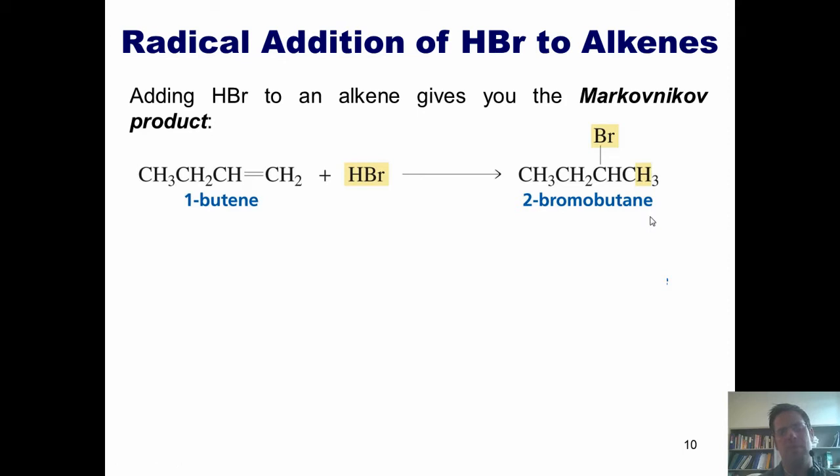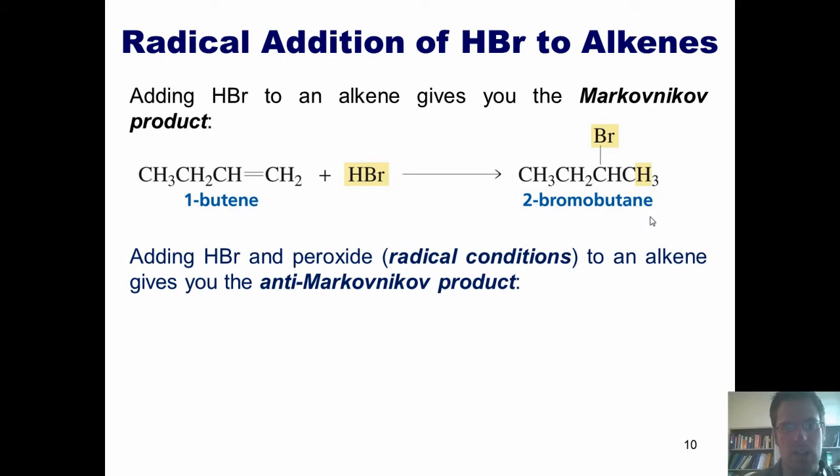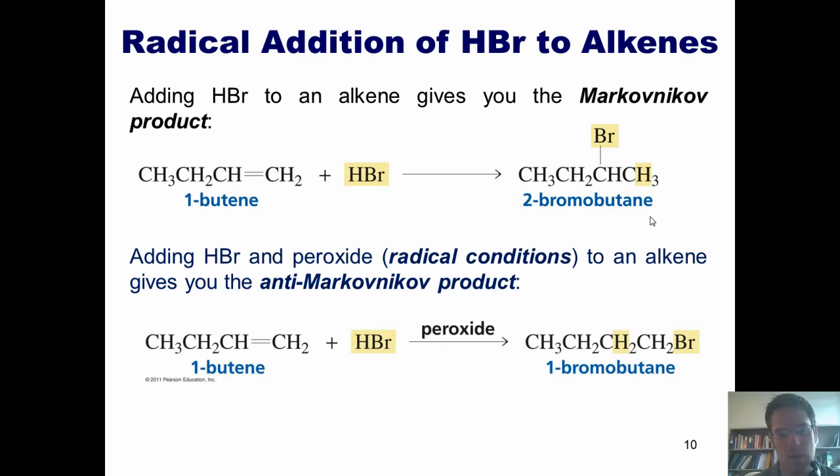So what in the world happens if I take the same alkene and treat it with HBr under radical conditions? And what are radical conditions with HBr? As it turns out, you can turn this regular boring HBr reaction with an alkene into a radical reaction if you add peroxide. Adding HBr and peroxide, that is radical conditions to an alkene, gives you the anti-Markovnikov product. So if I ever wanted to put the bromine in the anti-Markovnikov position, these are the conditions that I would do.